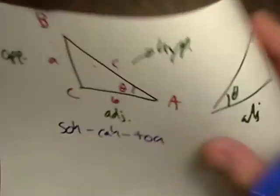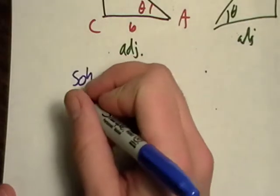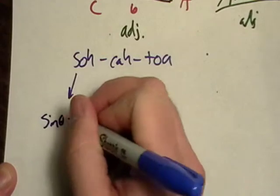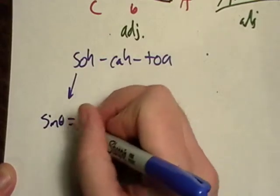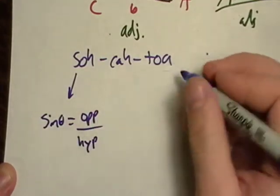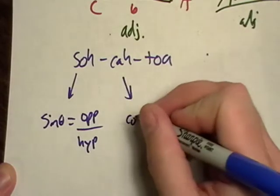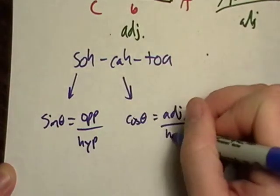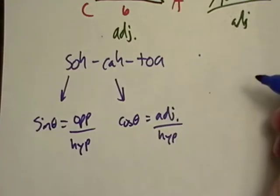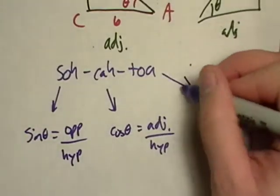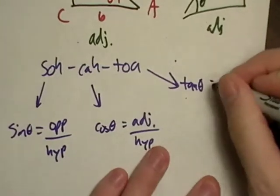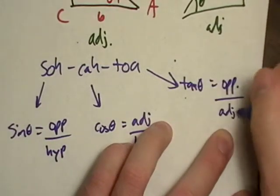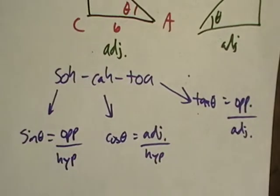And all that means, let me translate this into English: sine equals opposite over hypotenuse, cosine equals adjacent over hypotenuse, and then tangent equals opposite over adjacent.